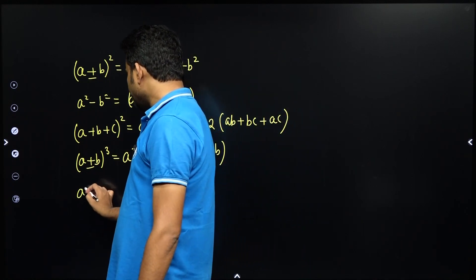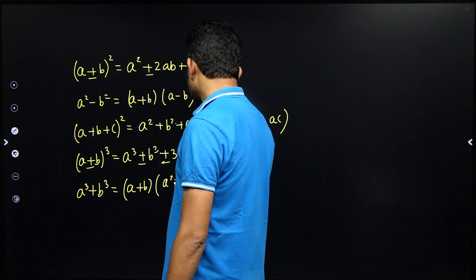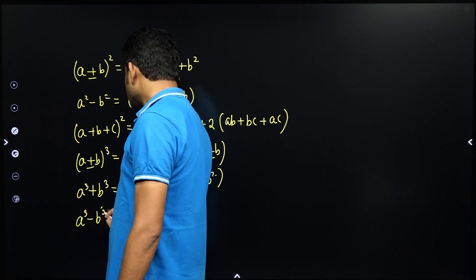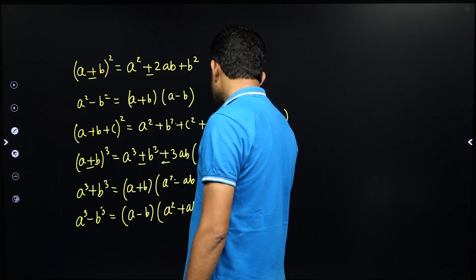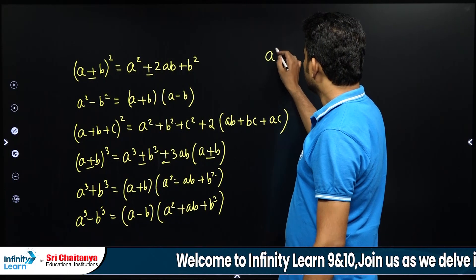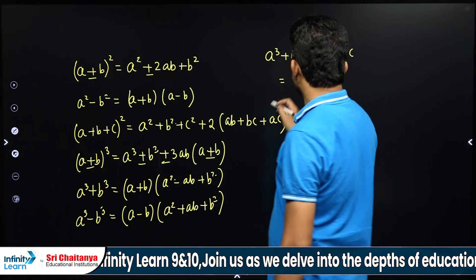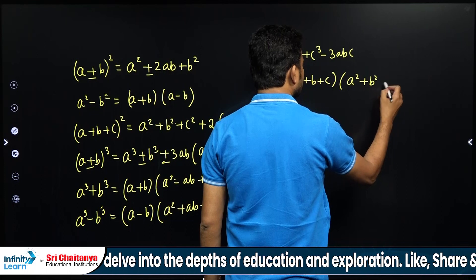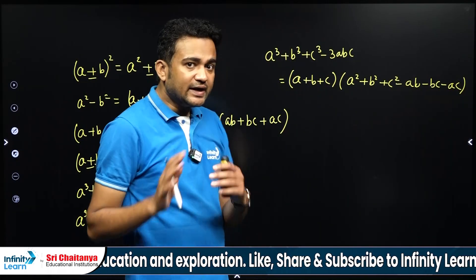Now the next identity: a cube plus b cube equals a plus b times a square minus ab plus b square. Similarly, a cube minus b cube is a minus b times a square plus ab plus b square. And the last identity is a cube plus b cube plus c cube minus 3abc equals a plus b plus c times a square plus b square plus c square minus ab minus bc minus ac.